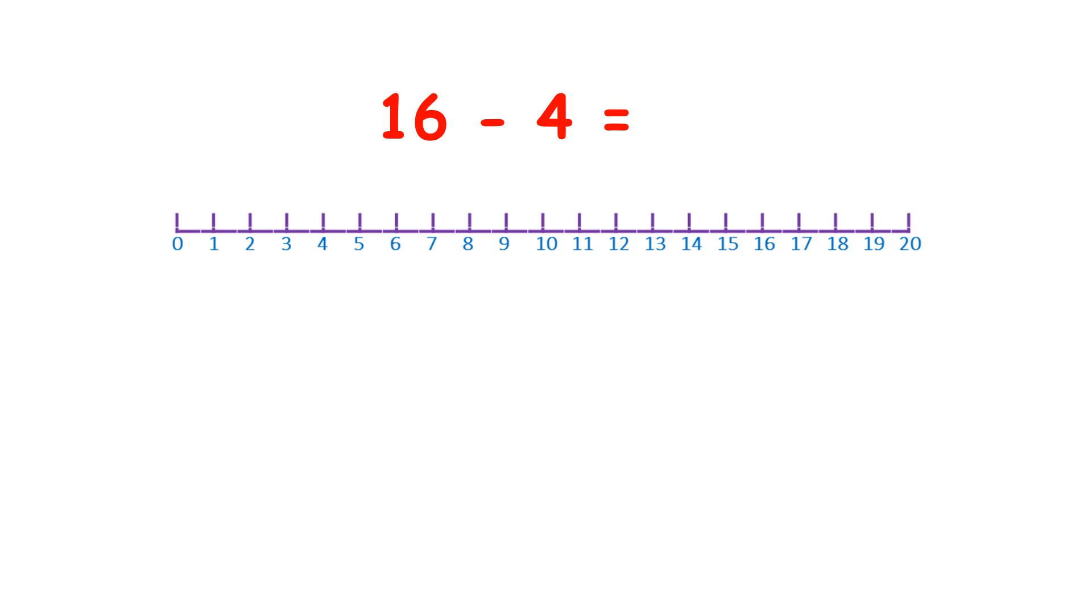Now let's look at 16 minus 4. So I'm going to start on 16, and what am I going to do now? Well, I'm going to make 4 jumps back, because I'm taking away 4. So let's jump back 1, 2, 3, 4. And you can see that I've landed on the number 12. So 16 minus 4 is 12.